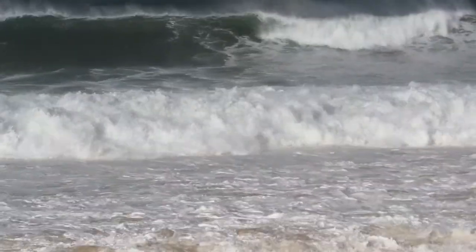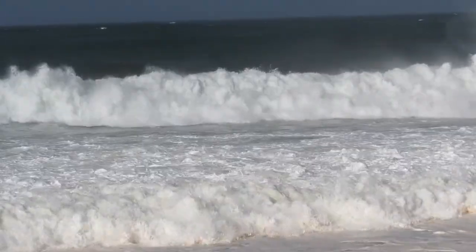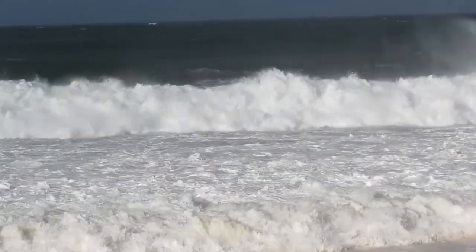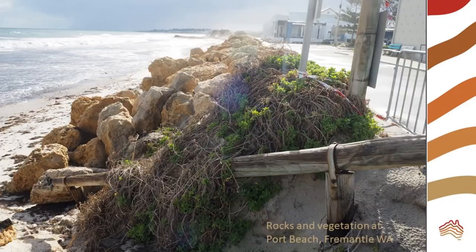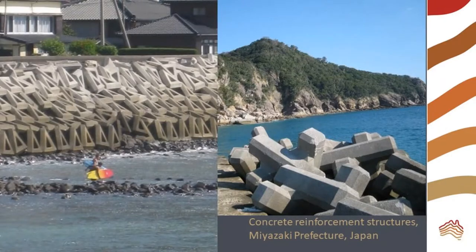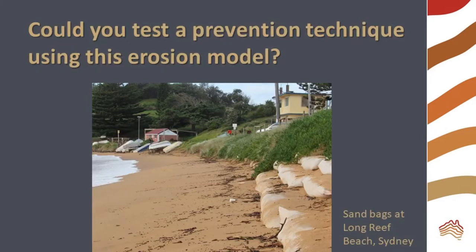Many places in Australia and around the world are facing coastal erosion and trying to engineer solutions to this. Sea walls, sand bags, large rocks and concrete structures are all used to try to prevent erosion. Planting vegetation on dunes is also used to stabilize the area. Could you test one of these techniques in this erosion model? How could you measure the results?